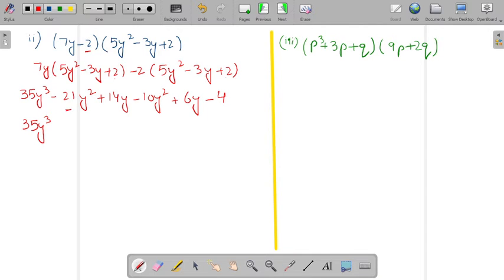So same thing. We will collect the like terms minus 21 minus 10. So minus 31y square plus 14y plus 6y. So this will become 20y and minus 4.